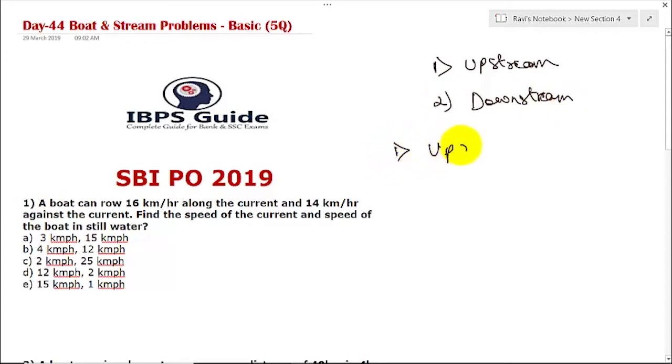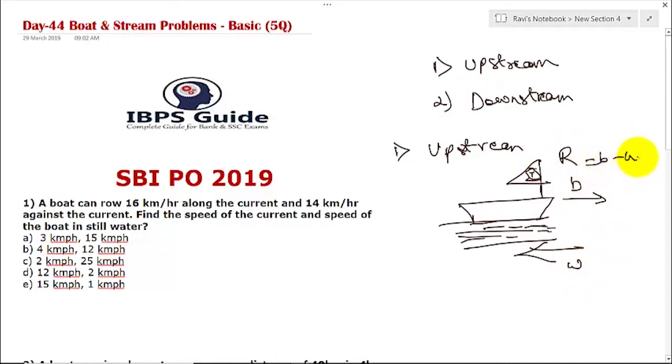Let us take first example, that is upstream. Suppose there is a river or you can consider it to be an ocean also, and there is a ship, Pirates of Caribbean. So it is going in this direction and suppose the water is flowing in this direction. What will be the relative speed? Suppose boat is going with speed of b and water is going with speed of w, so relative speed will be b minus w.